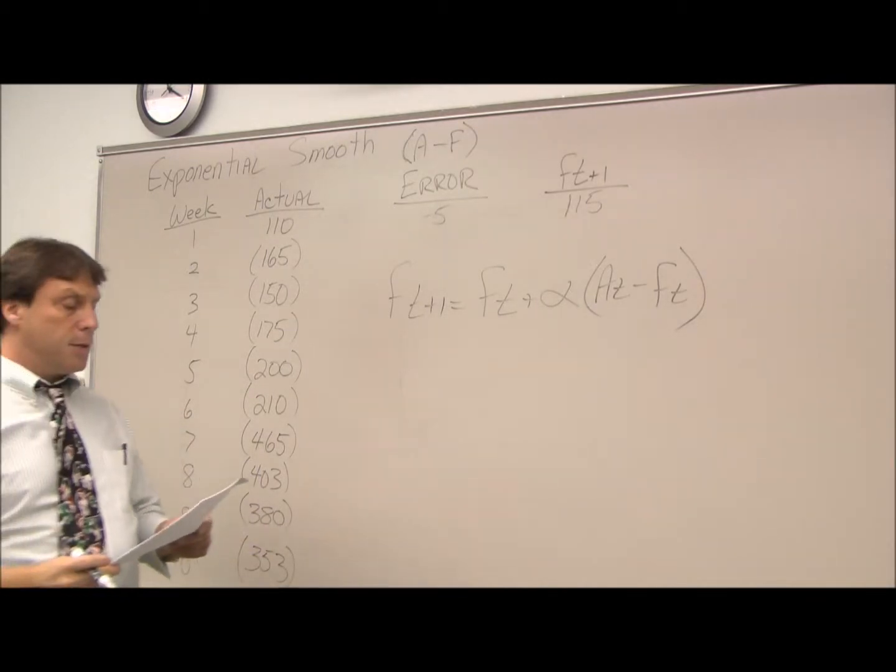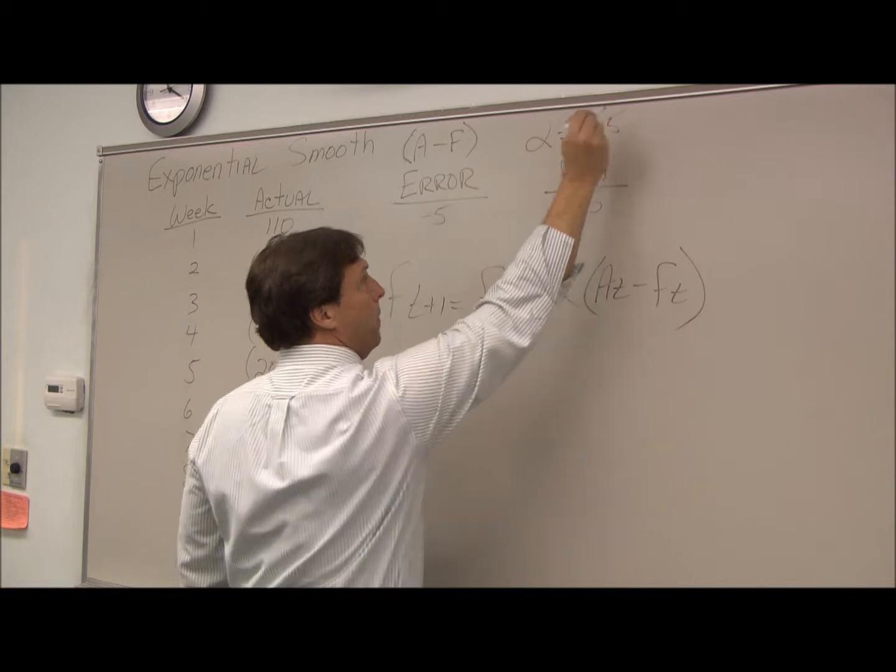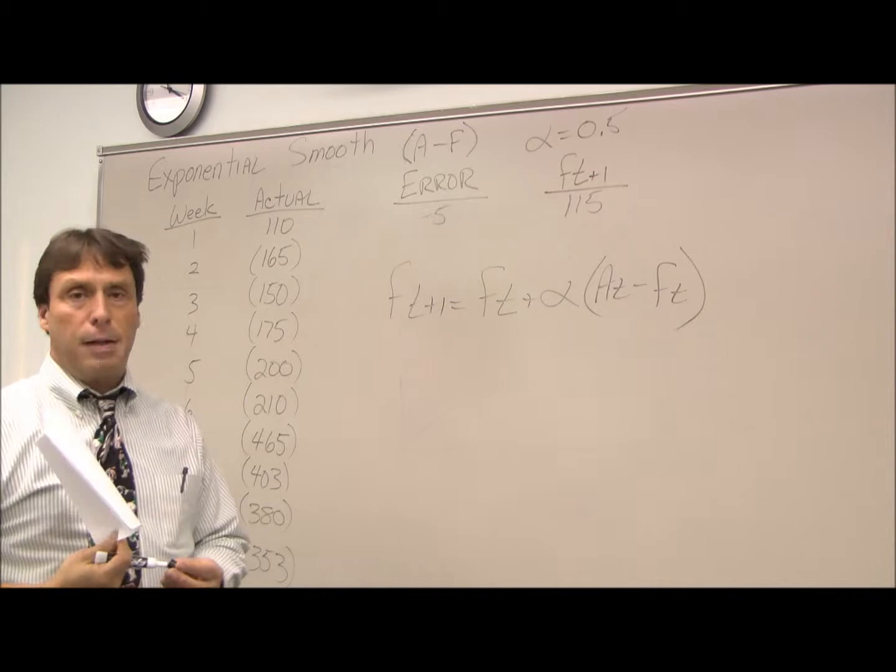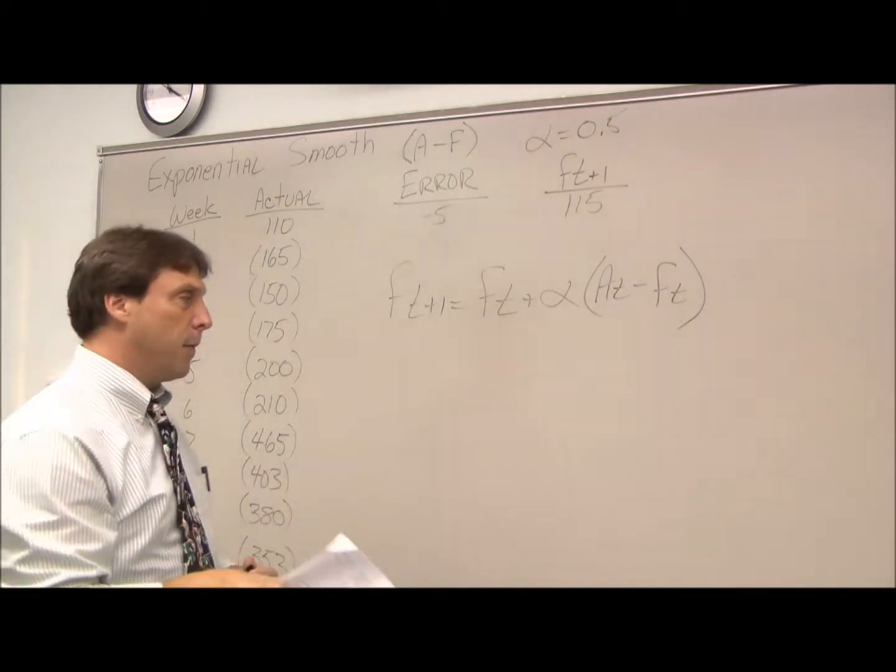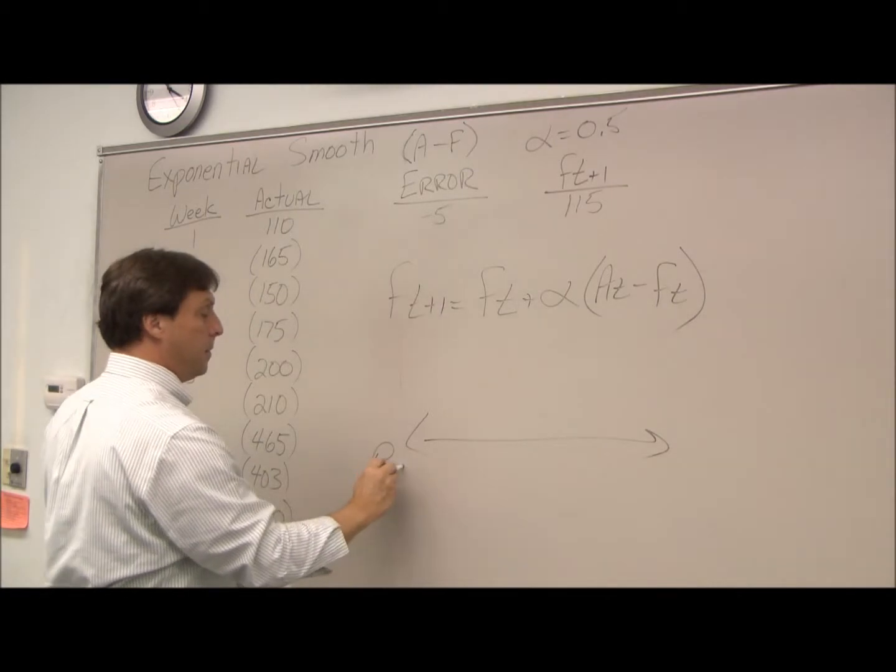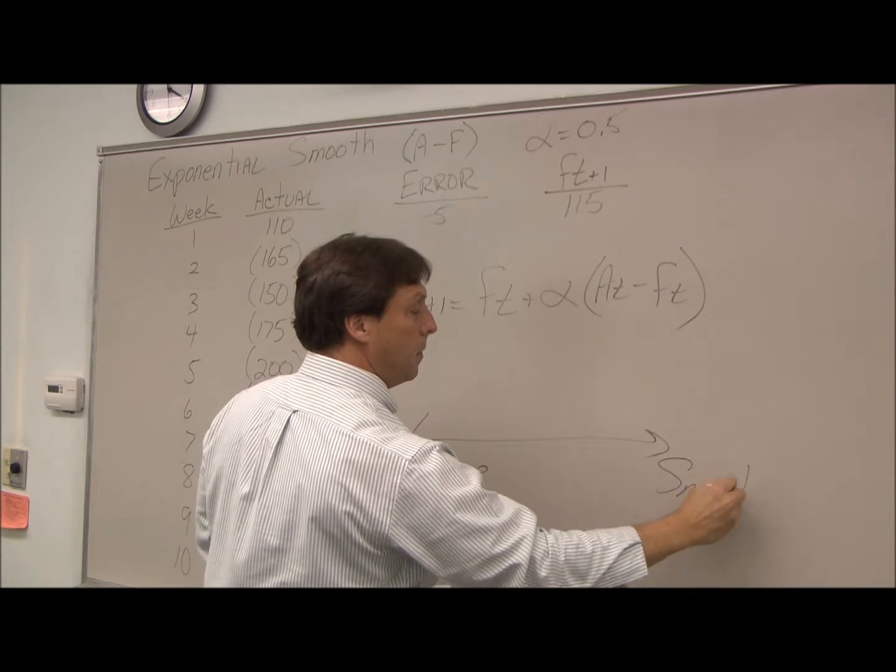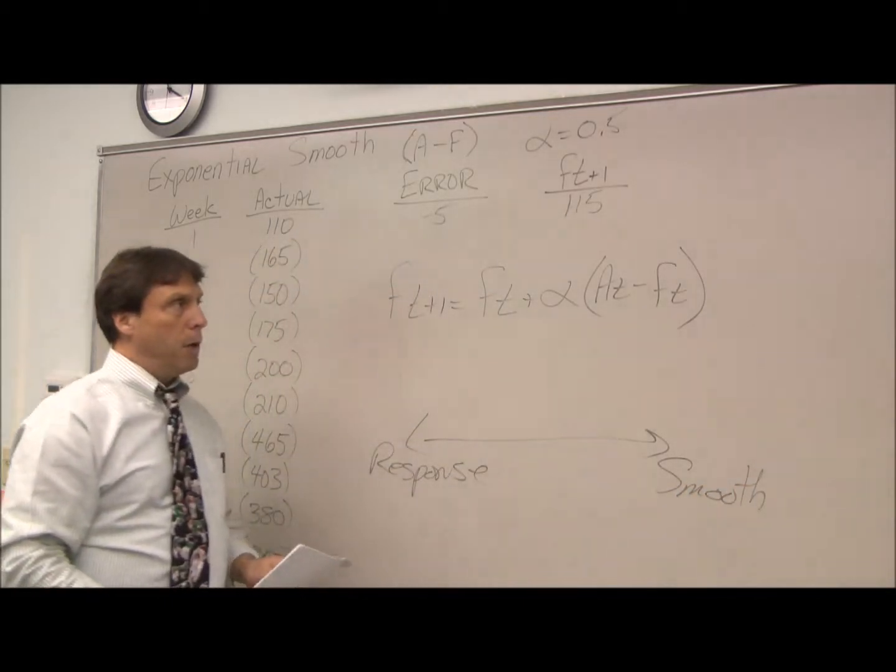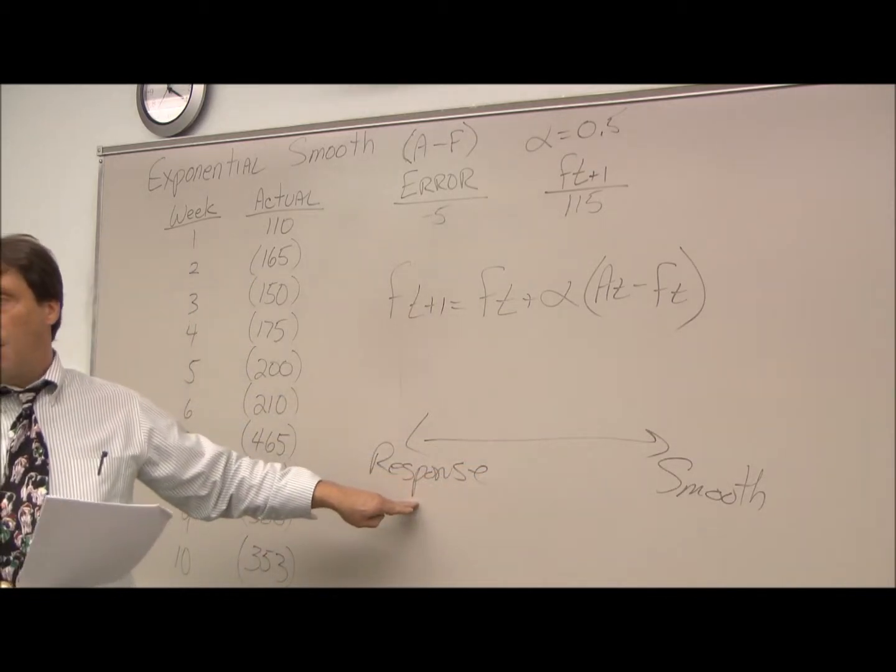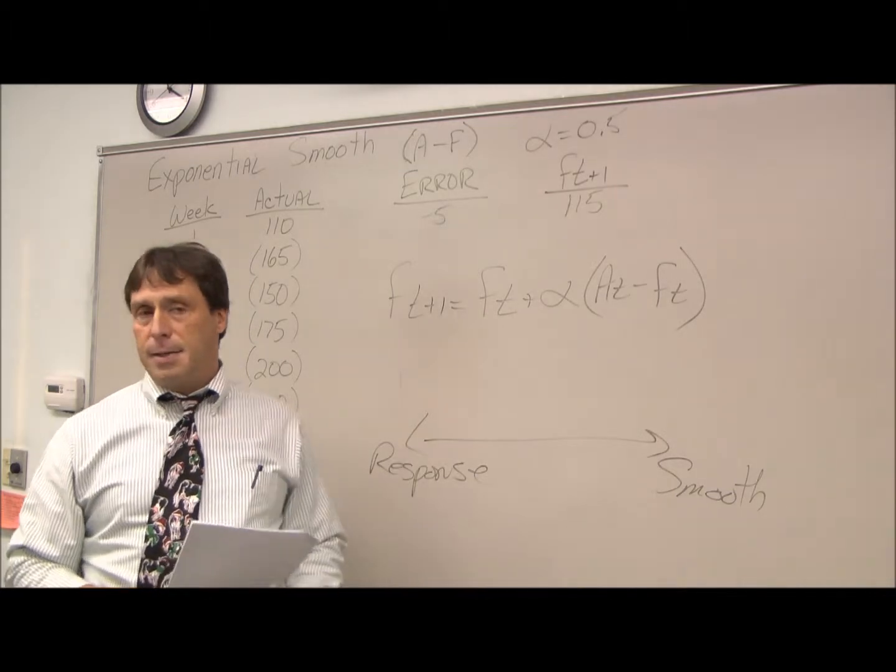For these problems we're just going to use an alpha equal to 0.5. What an alpha is, is a smoothing factor, how quickly we will have a difference almost between response and smoothing. So what we're doing with our alpha is kind of balancing how responsive we want our forecast versus how much we want to smooth out the peaks and valleys.